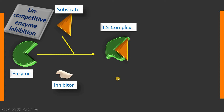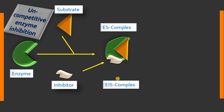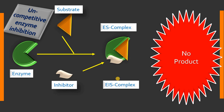After formation of the enzyme-substrate complex, this inhibitor molecule binds to form the enzyme-substrate-inhibitor complex. Once this inhibitor binds to the enzyme-substrate complex, there will be no further reaction and no product formation, thereby decreasing the rate of the enzyme-catalyzed reaction.